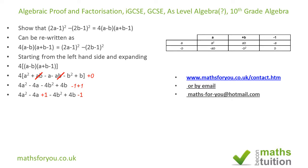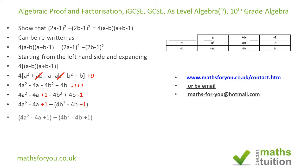Now I introduce brackets. Putting brackets around the b terms changes the signs inside, so plus 4b becomes minus 4b, and the plus 1 becomes minus 1 when the bracket is expanded back out. So I now have two separate bracketed expressions.